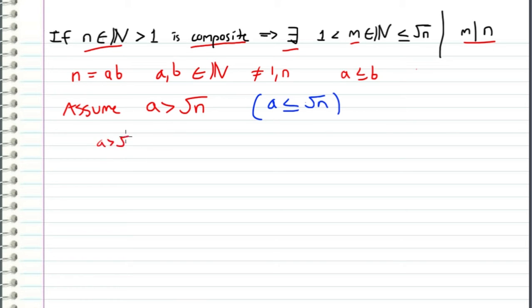So if we have a is greater than the square root of n, and then we have b is greater than or equal to a, then we can also say that b is greater than the square root of n. So the product a times b has to be greater than the square root of n times square root of n, which equals n.